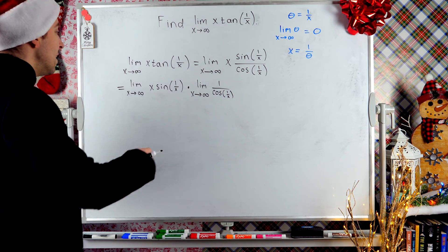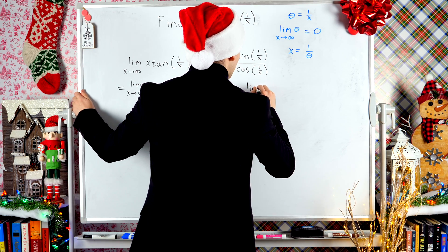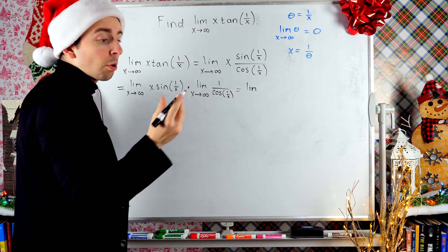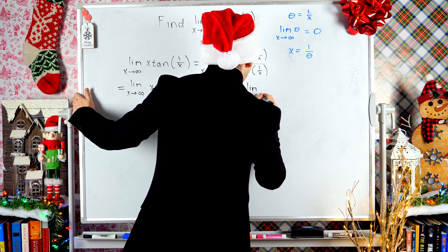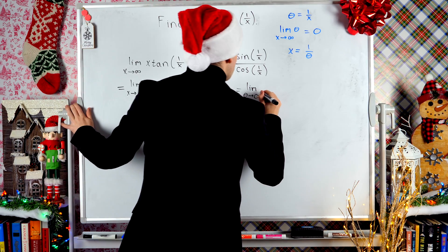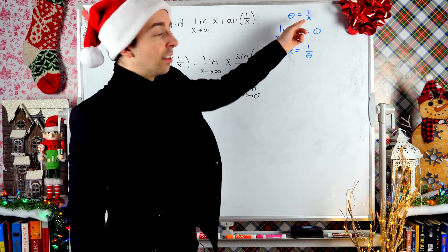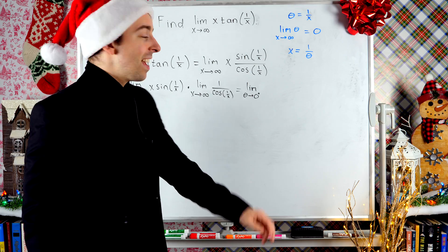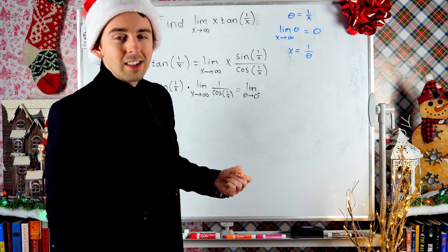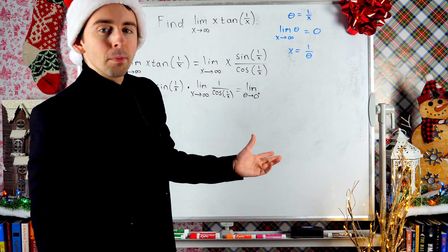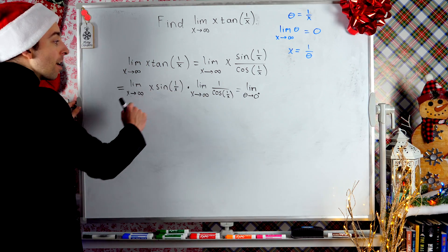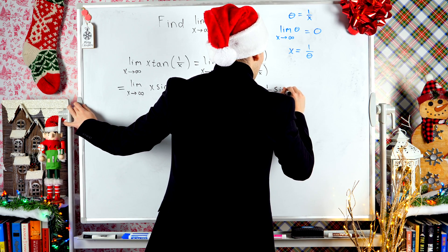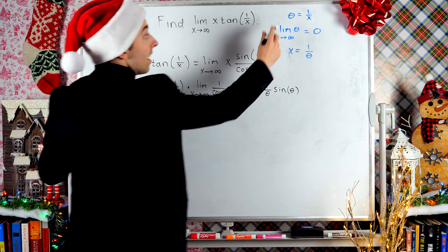So this is equal to the limit as theta approaches 0 from the right — because when x approaches infinity, theta, which is 1 over x, approaches 0 from the right, since x is approaching positive infinity and these are small positive numbers. Then we have x times sine of 1 over x: x is 1 over theta, and sine of 1 over x is just sine of theta, since theta is 1 over x.